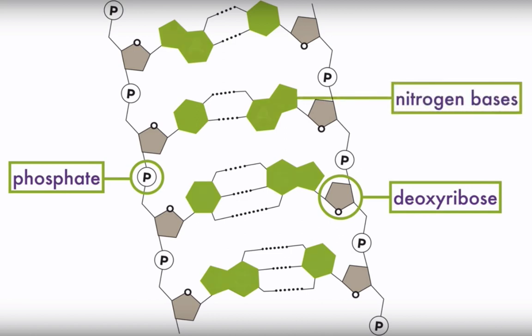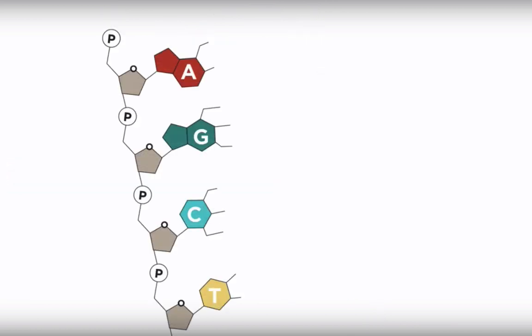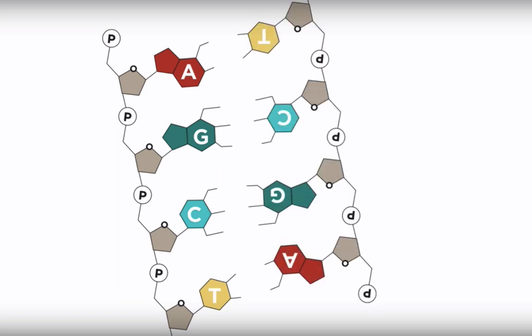Stable pairing occurs between guanine and cytosine, and between adenine and thymine. These bases meet each other at the core of the DNA helix. Three hydrogen bonds form between guanine and cytosine, and two hydrogen bonds form between adenine and thymine. The bases on each strand of DNA are complementary to each other, and complementary pairs always involve one purine and one pyrimidine base.